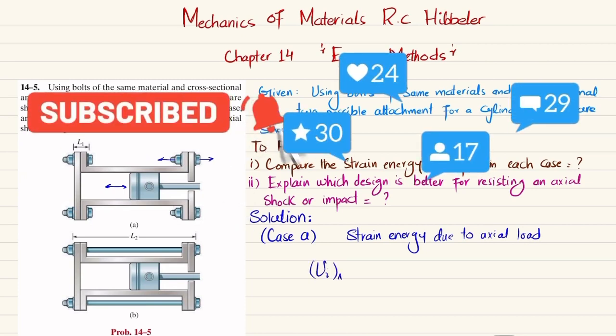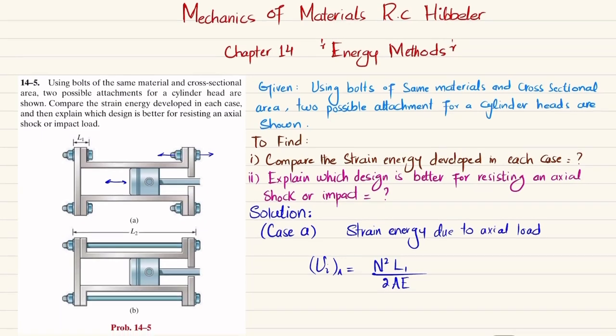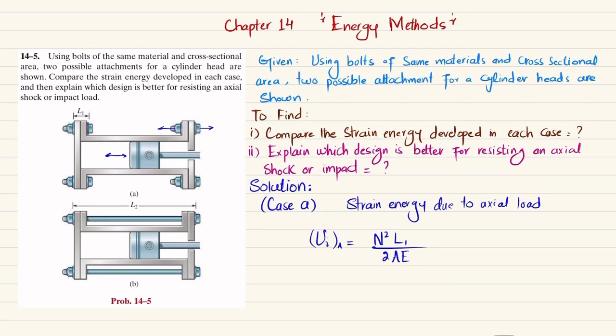For case A, I will write Ui_A, and that is equal to N² L1 divided by 2AE. Since area and material are the same, N is the normal force in this bolt, where L1 is the length of this bolt.